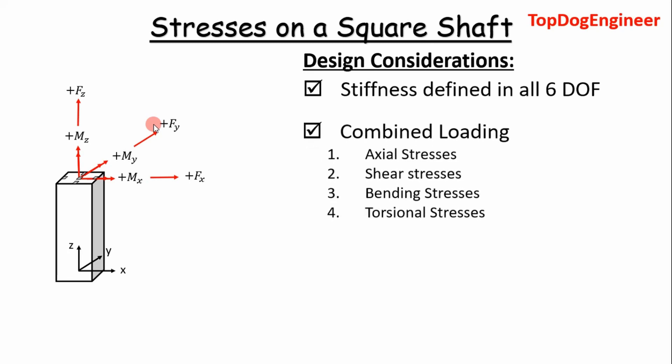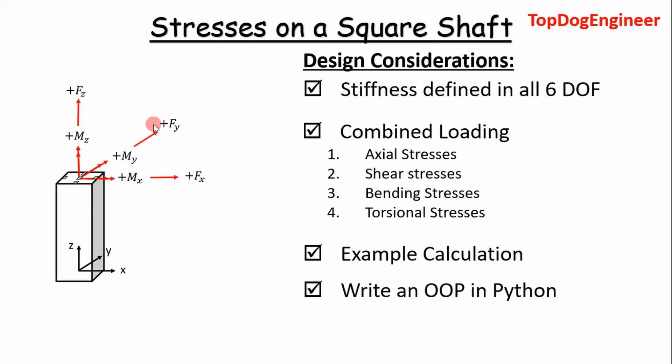So why would you want to do this? Because it is the most complete analysis. You are going to combine axial stresses, shear stresses, bending stresses, and torsional stresses into one. You are going to superimpose those and you will be able to calculate the worst case stress across the cross section. Before we do any programming, I am going to step through an example calculation, and then in the next video we will write an object-oriented program in Python to show how to integrate all these features into an automated program.